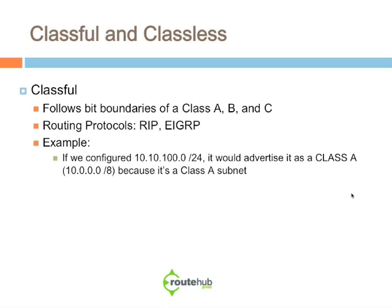Let's provide an example to help understand Classful behavior. If we configured on one of our interfaces 10.10.100.1, that network would be 10.10.100.0/24. Based on bit boundaries, this is a Class A subnet because the first octet is 10. Therefore, if we are configuring this with RIP, it would advertise that subnet as a Class A, which is 10.0.0.0/8.